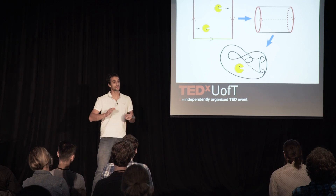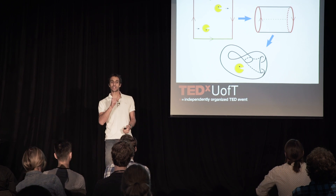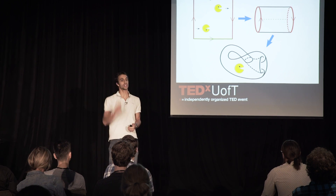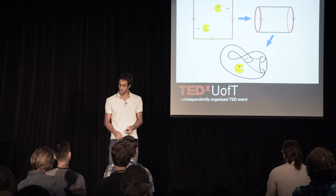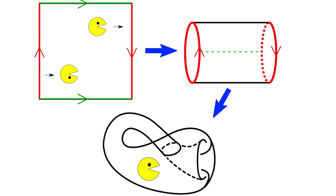Or maybe the screen is set up so that if Pac-Man goes up through the top, he comes in through the bottom as usual. But if he goes out through the right at the top, he comes in from the left at the bottom upside down. So what's going on here is that the right and left are connected, but in such a way that there's a twist when you glued them together. If you go through the same process we did before, Pac-Man here would live on the surface of a Klein bottle.